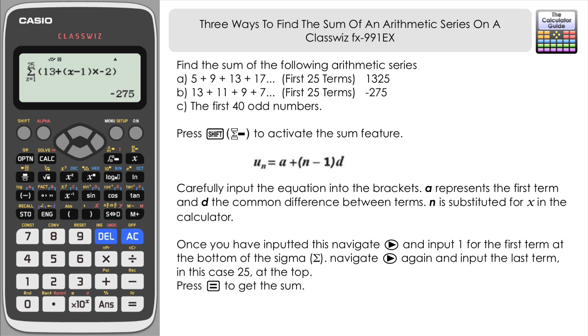We might expect this to be negative because the series is decreasing. After the first few terms, we start getting negative values, and going up to the 25th term, -275 is an appropriate answer.